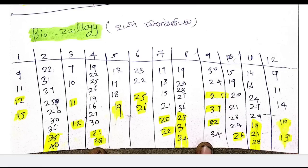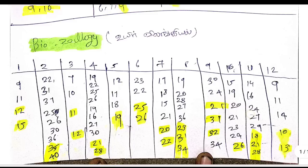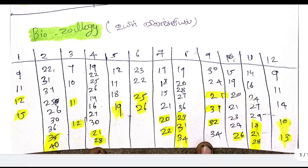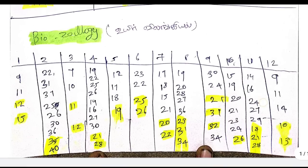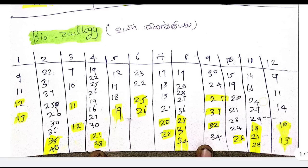Bio-Zoology Chapter 7: question numbers 11, 19, 18, 20, 15, 21, 22 — question 22 is a 5-mark question. Chapter 8: question numbers 19, 20, 28, 27, 36, 23, 31, 34 — question 34 is a 5-mark question. Chapter 9: question numbers 30, 24, 21, 31, 32, 34 — questions 21, 31, and 32 are 5-mark questions.